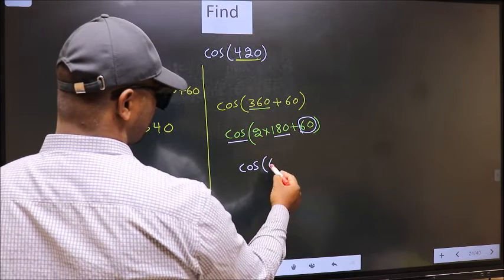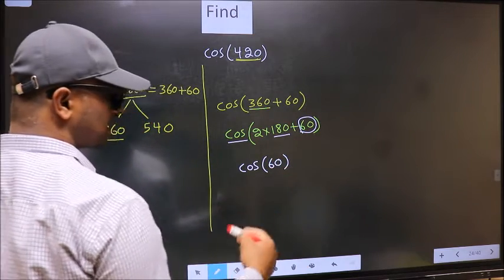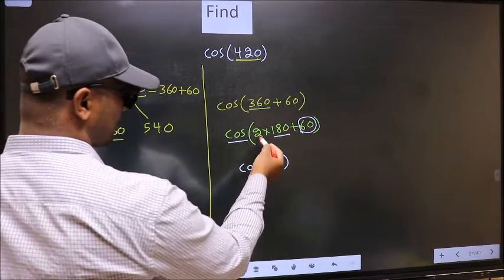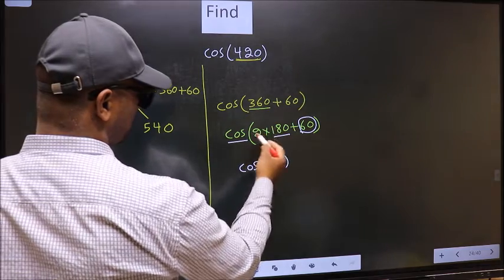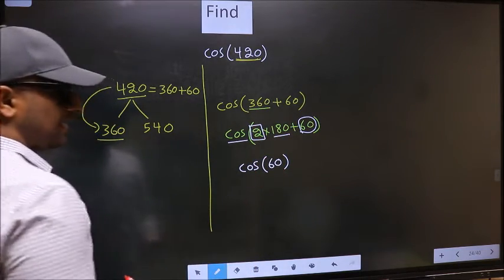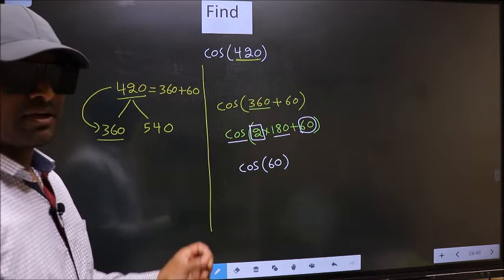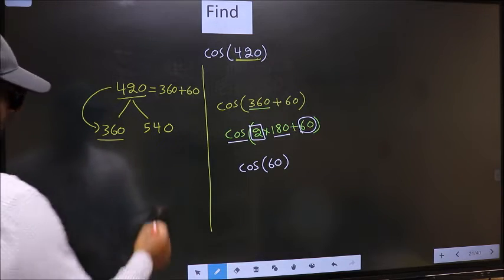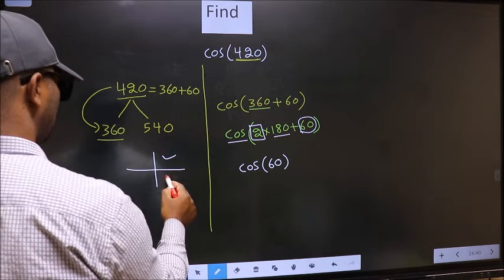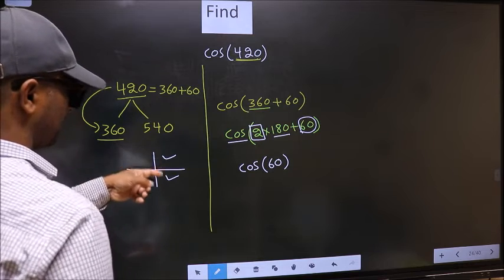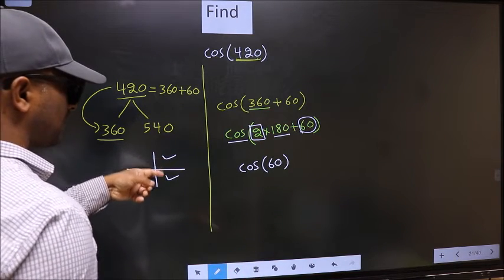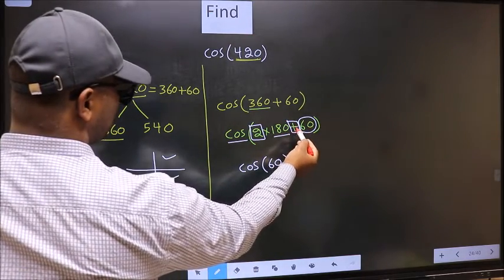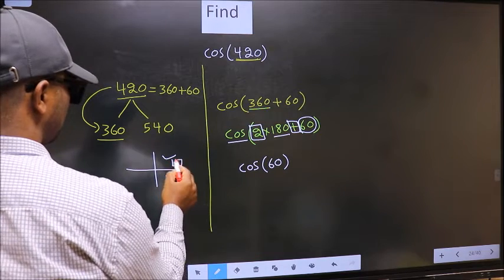Now the question is, will we get here plus or minus? To answer that, we should look at the number before 180. That is 2. And 2 is even. And all the even multiples of 180, they lie either in the first or in the fourth quadrant. So now to select the quadrant, we should look at this symbol. Here we have plus. That means, the angle lies in the first quadrant.